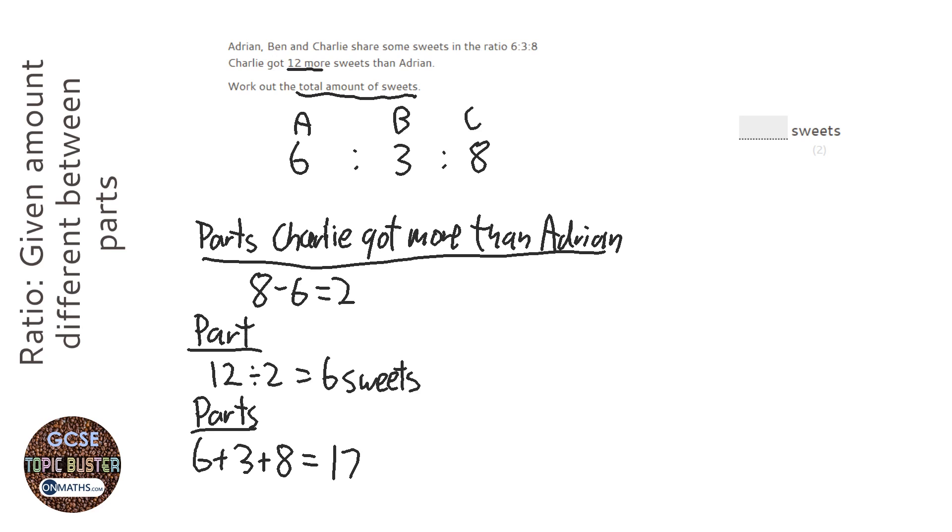Each of them is worth 6 sweets. So to work out the amount of sweets, we do 17 times 6. Now we could do 7 times 6, which is 42, and 10 times 6, which is 60. So add the two together, it's 102.